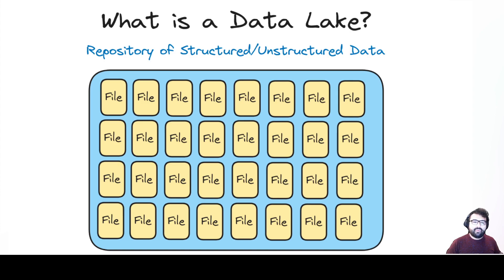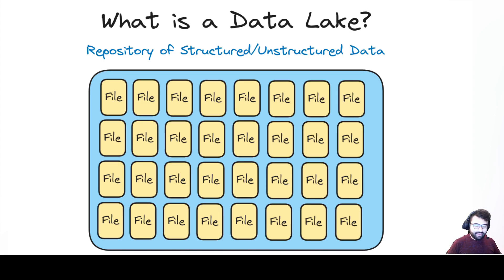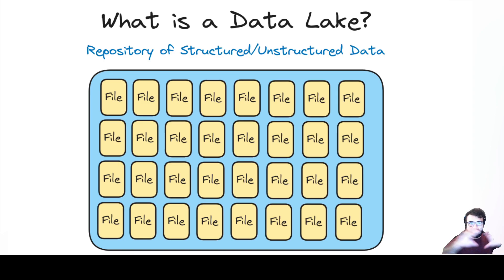So what happened is we said, let's have a place where we can put all this data — a big repository, essentially a big hard drive for this data. That could be a Hadoop cluster where you have a bunch of computers networked together using Hadoop software to act as one large hard drive. Or you could be using cloud storage like Amazon S3, which uses object storage, where the actual storage is abstracted by a layer of metadata objects, and you interact with those metadata objects to access the files.